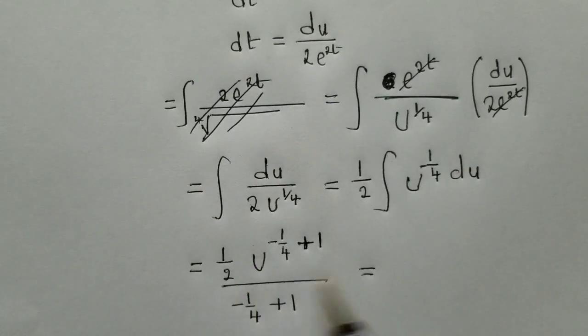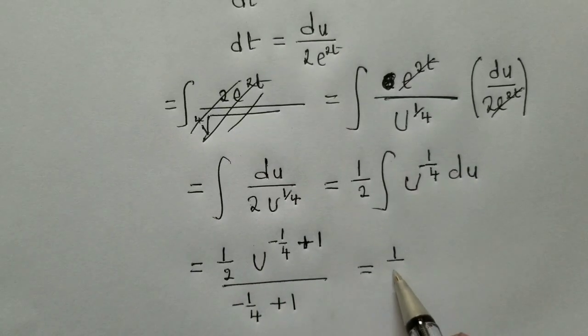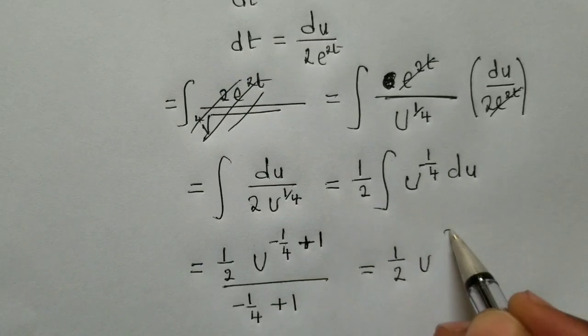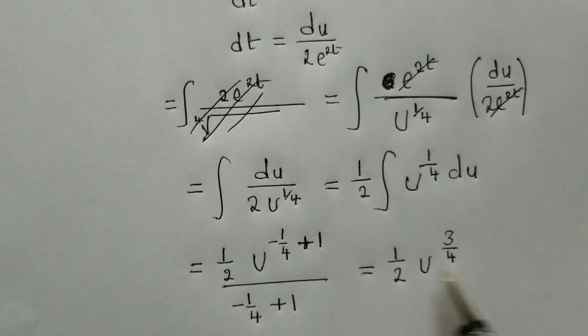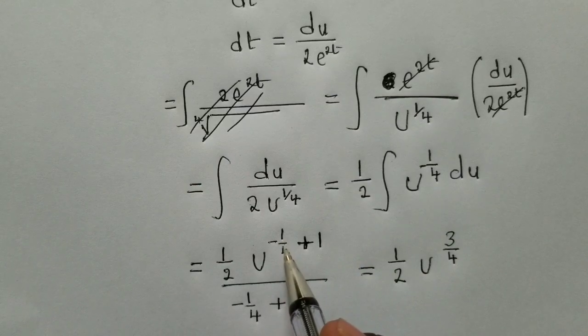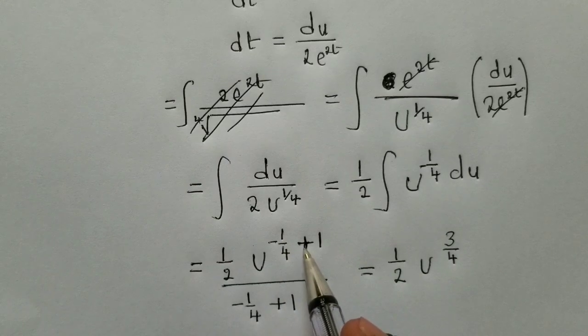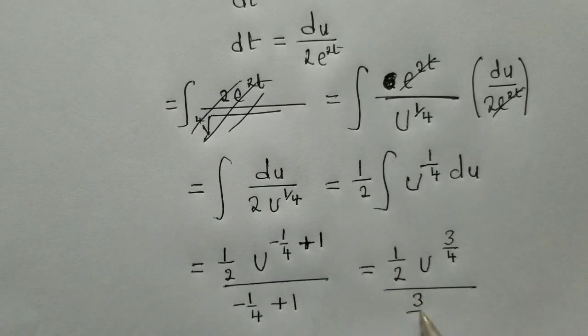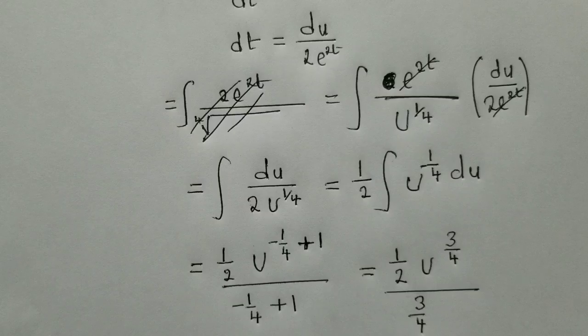Then we say equal to, we simplify, we have 1 over 2, u there. This one will just give us 3 over 4. Negative 1 over 4 plus 1. This is what you're going to get. And down here, we'll get the same as a denominator.